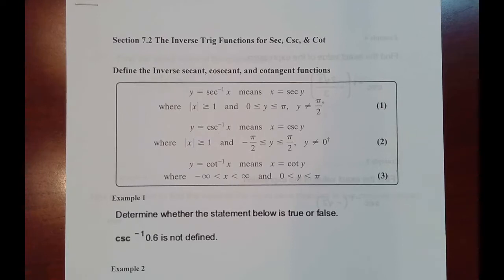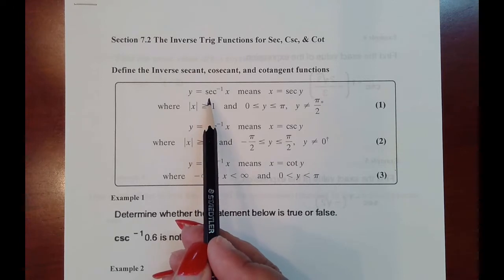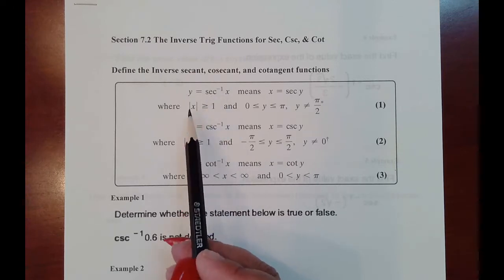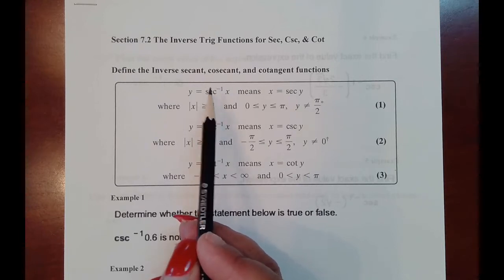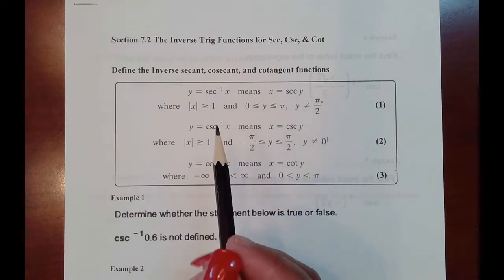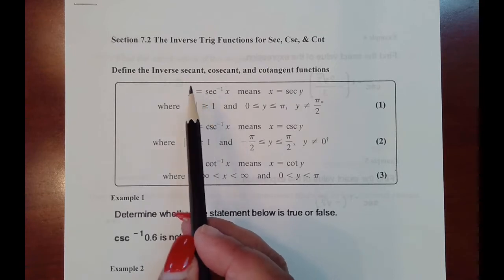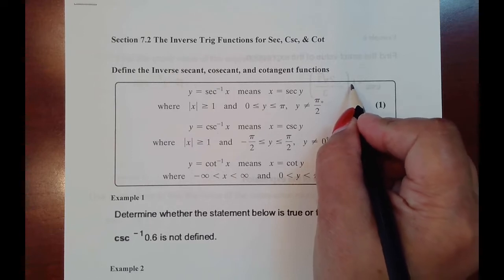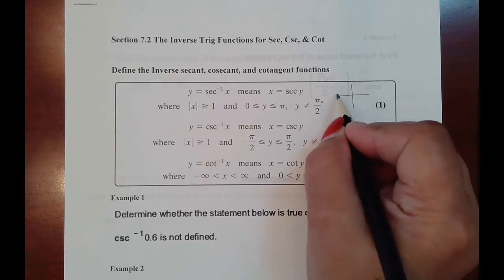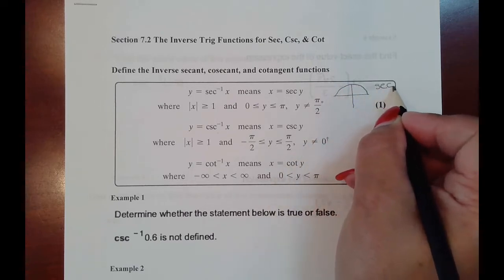First let's start with inverse secant. One good way to cut down on what you have to memorize is if you've memorized the inverse cosine — remember that inverse secant is related to inverse cosine because they are reciprocals. So they actually share the same restriction area. Secant and cosine are reciprocally related, so you're going to use the same restrictions, which go from 0 to pi, same thing as inverse cosine.